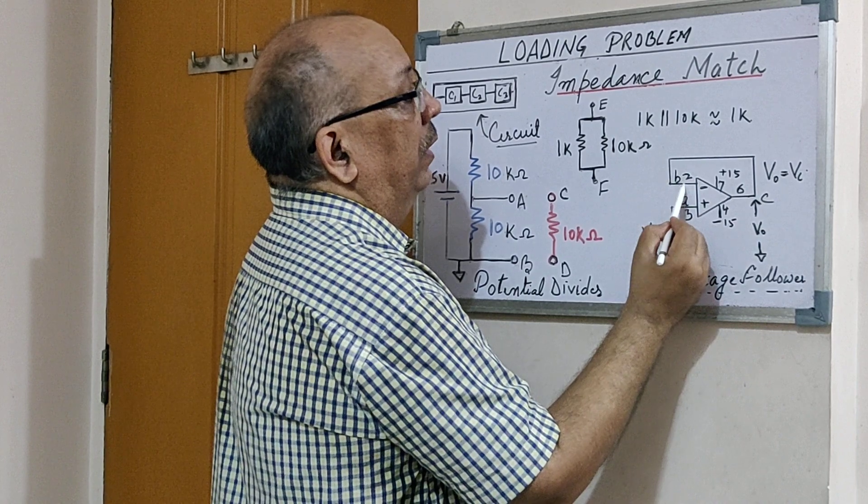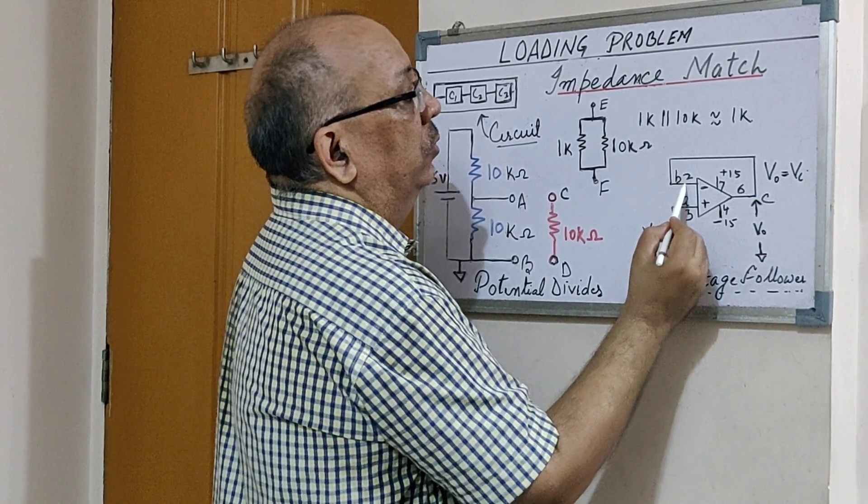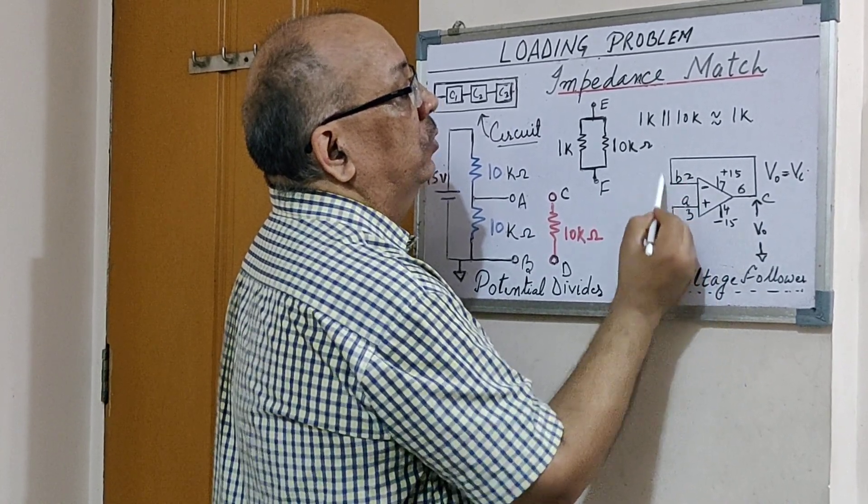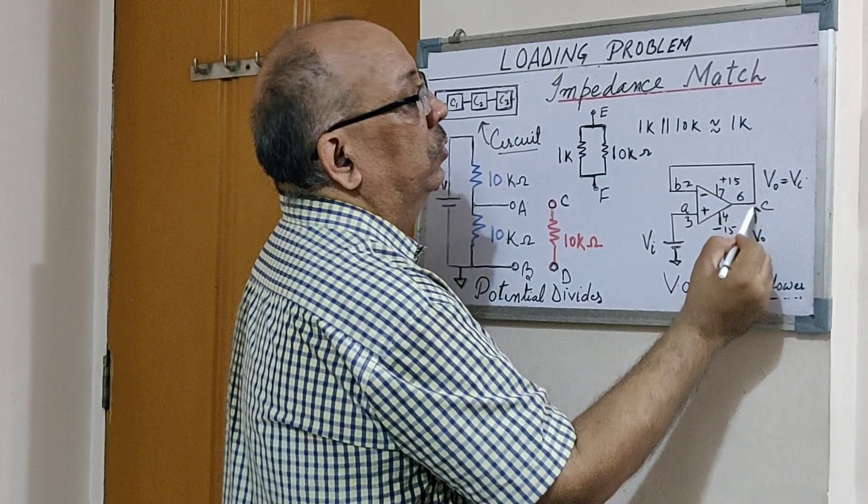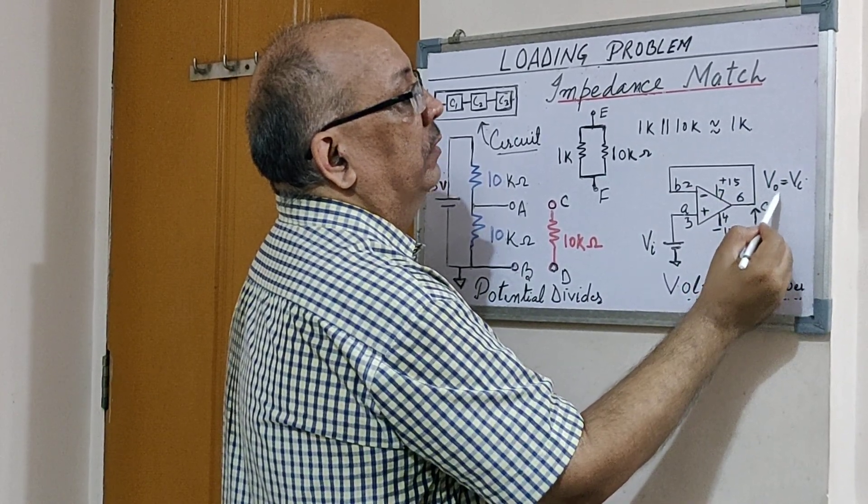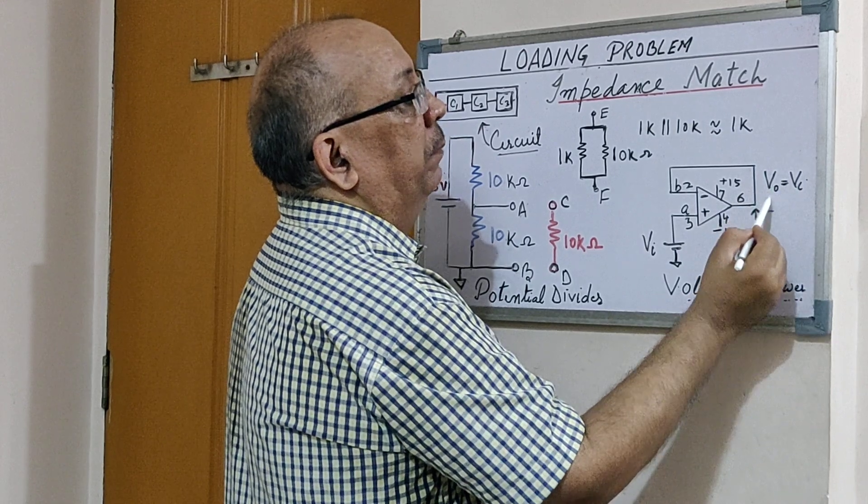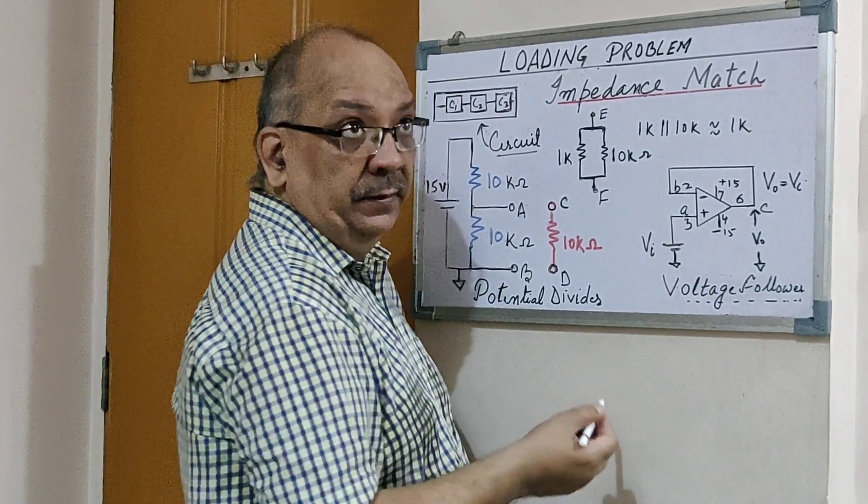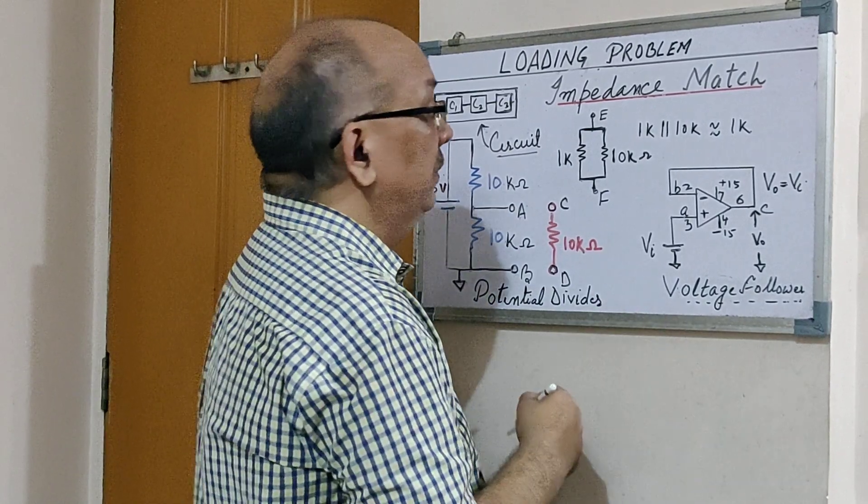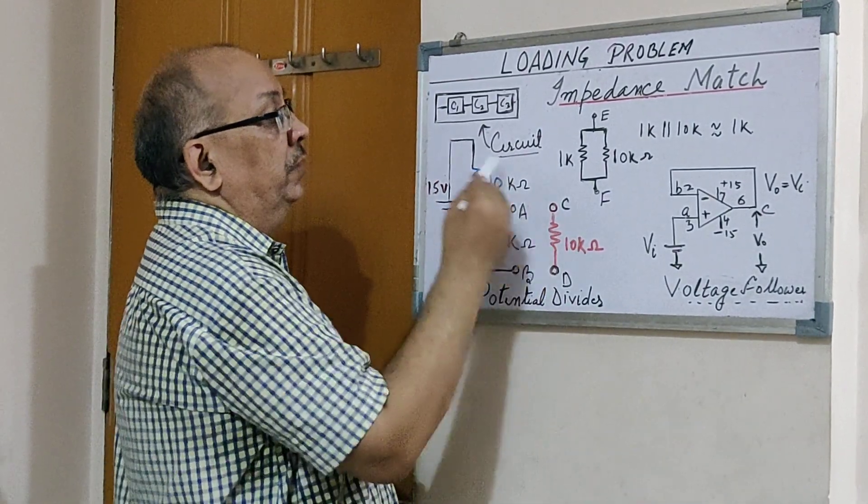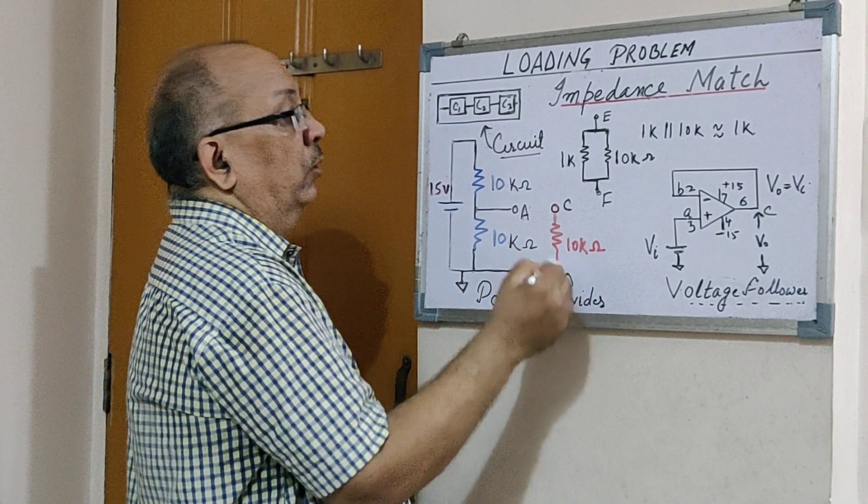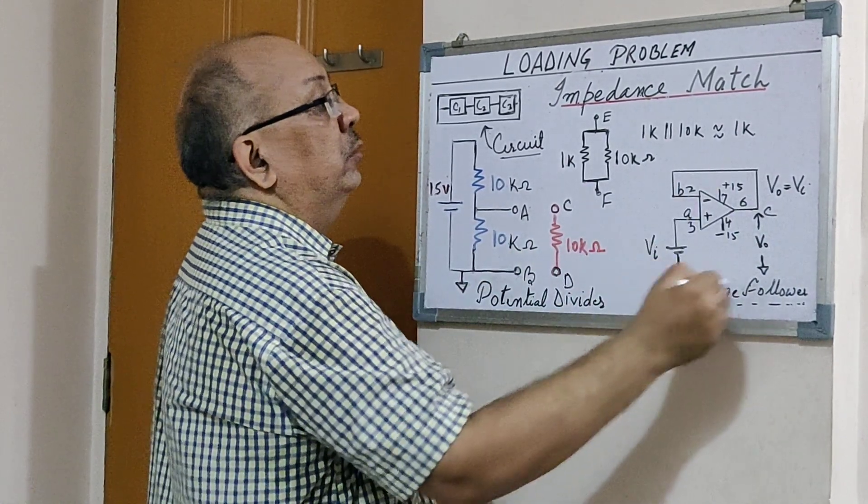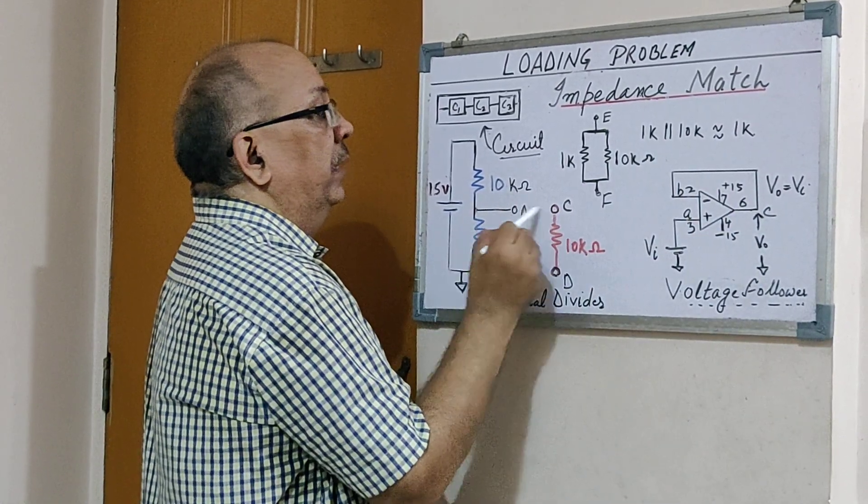will remain V-in. So whatever is the voltage at the input, the same I am getting at output. But the question arises, what's the use of such a circuit? The interesting part here is, if I don't have any choice of changing neither the potential divider nor the load, and if I introduce this op-amp circuit between A and